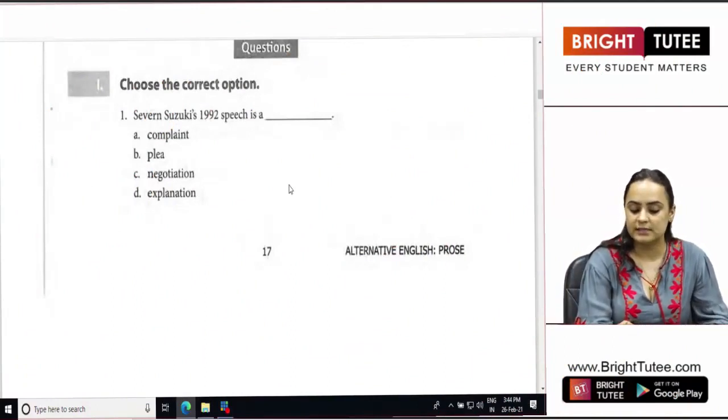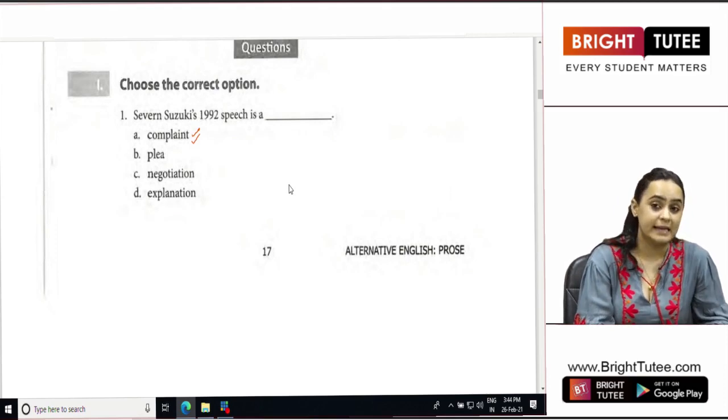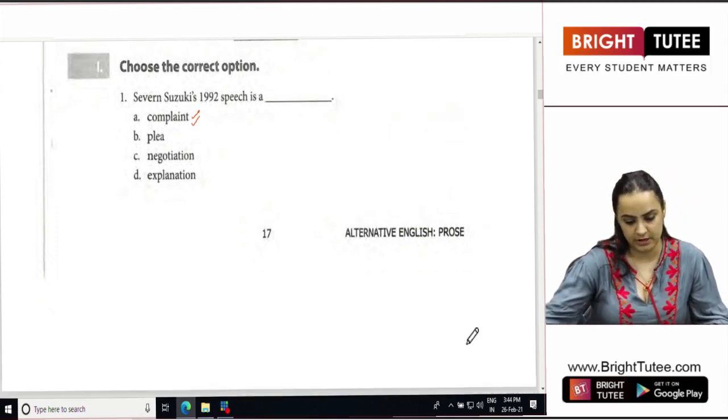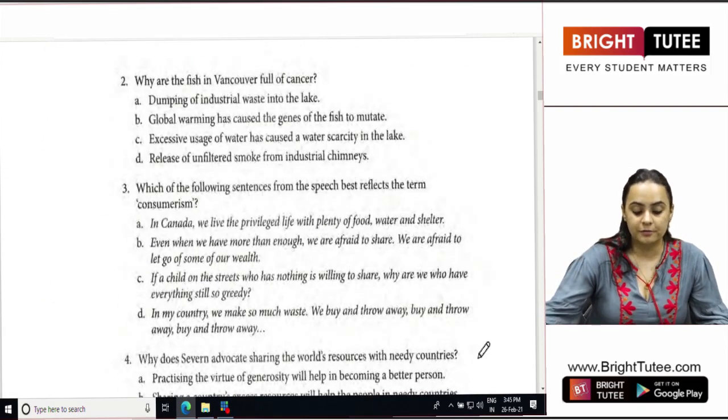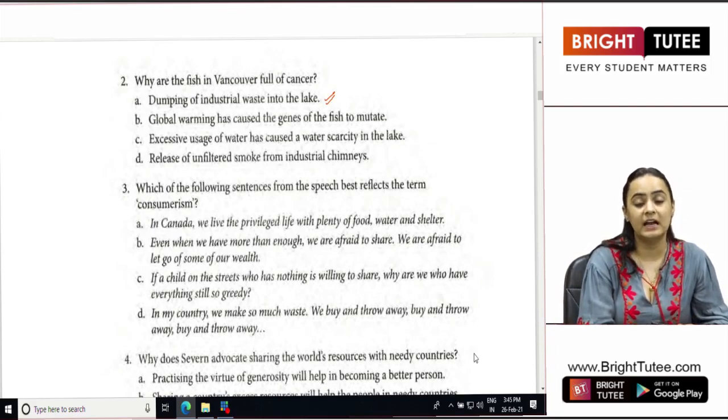Severn Suzuki's 1992 speech, as I have just told you, is a complaint that she makes to the people present there. Why are the fish in Vancouver full of cancer? So how did the fish get cancer? Because obviously, the industrial waste was being dumped into these lakes, these water bodies.